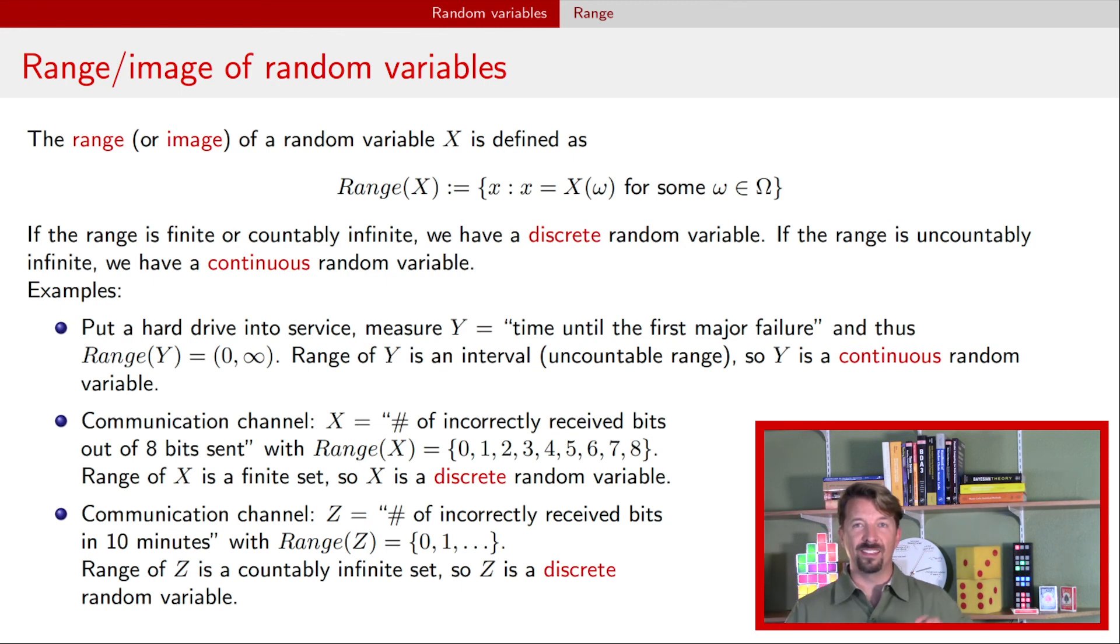The main purpose of making this distinction between discrete random variables and continuous random variables is that we will need to treat those two differently when we deal with the mathematics behind them. The next video will be part two in this series.